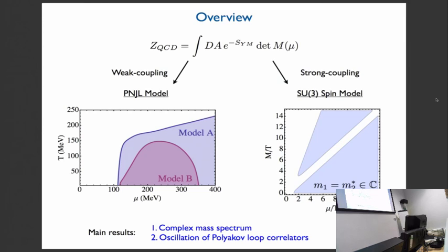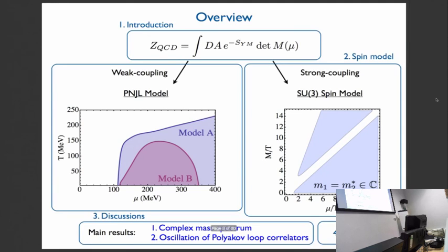In these two different cases, we found two same results. First, the mass eigenvalues associated with the Polyakov loop become complex at finite density. And as a consequence, the Polyakov loop correlator has the sinusoidal oscillation in addition to the exponential decay. I'll just give a brief introduction about the sign problem. And I think I'll spend most of my time talking about spin model, because this is more recent. Then I'll discuss our main results, talk a little bit about the PNJL model, and then conclude.